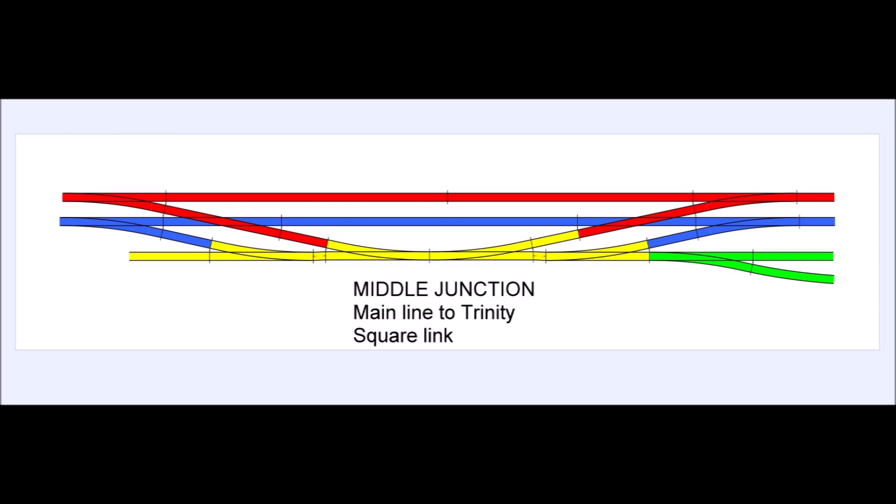Naturally, the next thing to do was to take a spur from the yellow going the other way. So now trains coming out of the green line could cross onto the blue down main, and trains coming on the red up main could come across through the yellow and into the green and access Trinity Square. And that actually solved my problem.